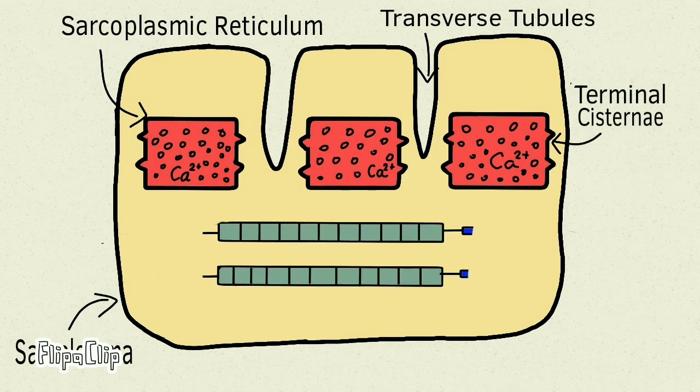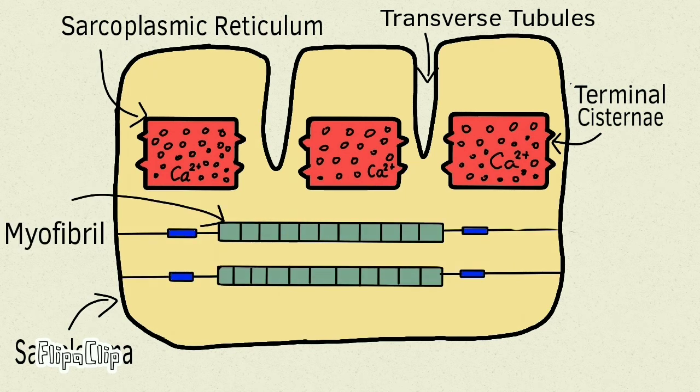Then comes the most interesting part: the myofibrils. The myofibrils are arranged inside the muscle fibers and they are individually formed by a sarcomere. A sarcomere is the basic unit of muscle contraction. These sarcomeres are bundled up to form myofibrils, which are attached to the sarcolemma using membrane proteins.